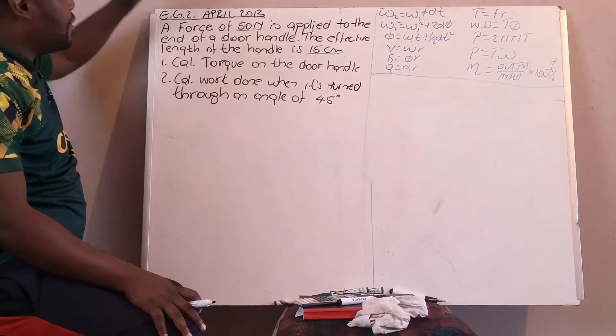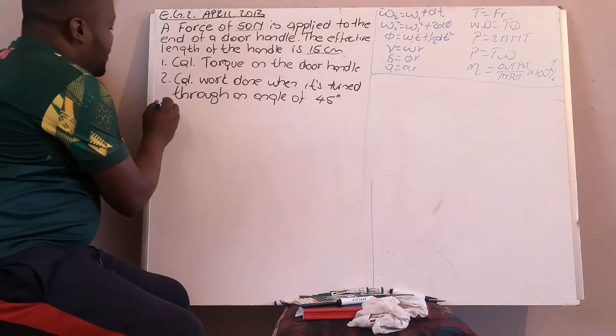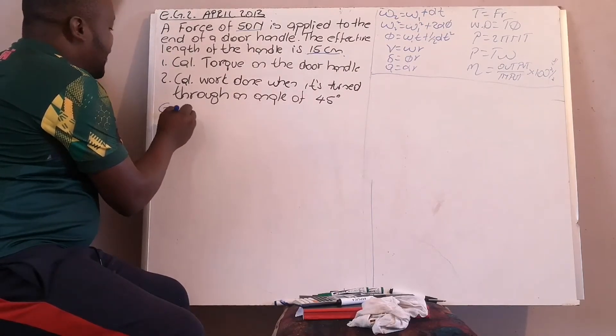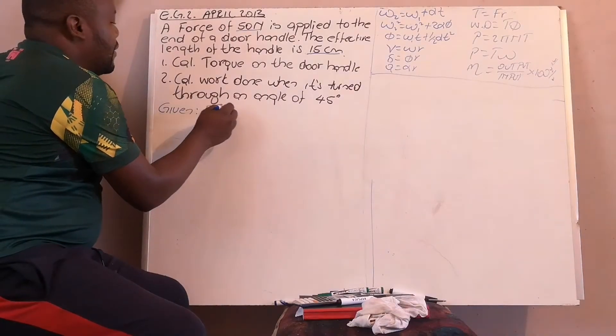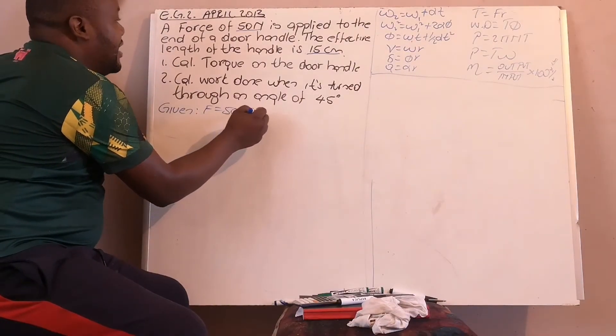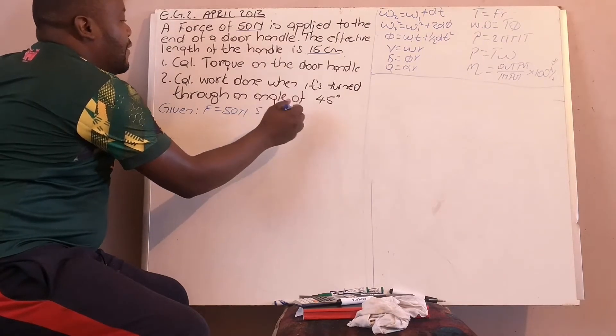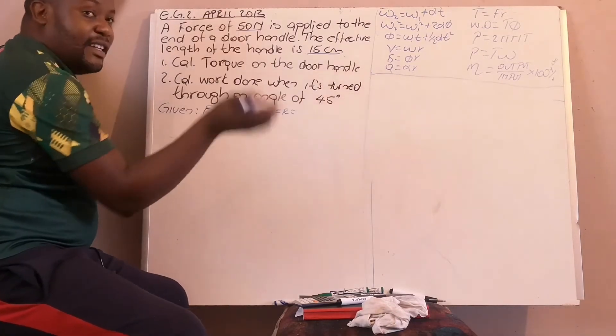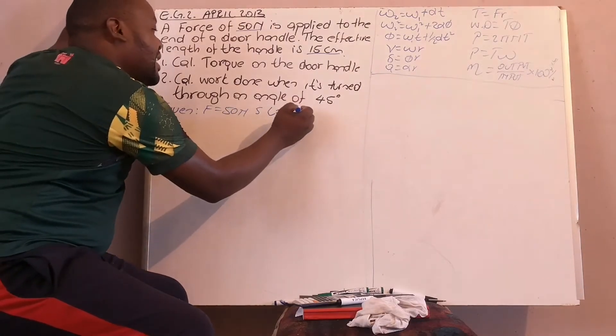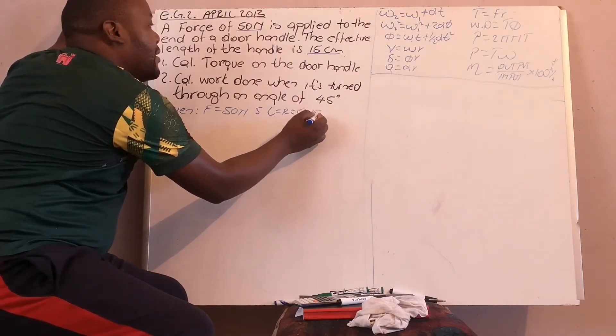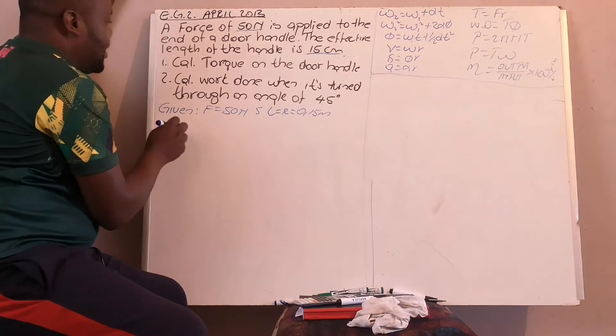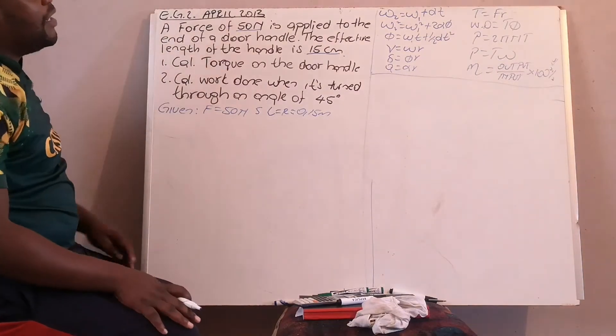The second question is to calculate your work done. Now write your data down. You are given the force of 50 newtons and the length of 15 centimeters. Converting to basic units, that's 0.15 meters. First question: calculate your torque.